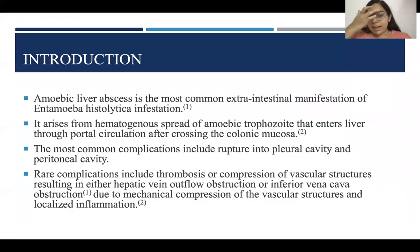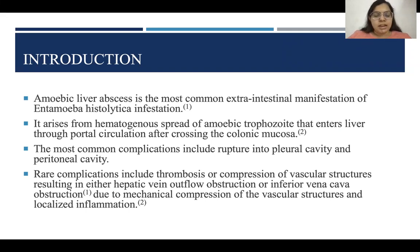Introduction: Liver abscess is the most common extra-intestinal manifestation of Entamoeba histolytica infestation. It arises from hematogenous spread of amoebic trophozoites that enter the liver through portal circulation after crossing the colonic mucosa. The most common complications include rupture into the pleural cavity and peritoneal cavity. Rare complications include thrombosis or compression of vascular structures resulting in hepatic vein outflow obstruction or inferior vena cava obstruction due to mechanical compression and localized inflammation.